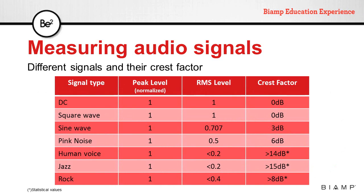The same way, we can calculate the crest factor of various test signals, like square waves, sine waves, and pink noise. For real-life sounds, we can only rely on statistical values. This table shows, for instance, that human voice RMS level is about 14 dB below peak level. Jazz music is roughly the same at 15 dB, but rock music or compressed music is less than that, usually about 8 dB below peak level.